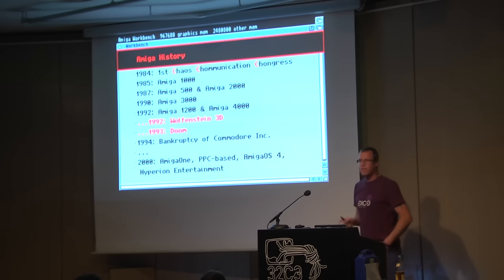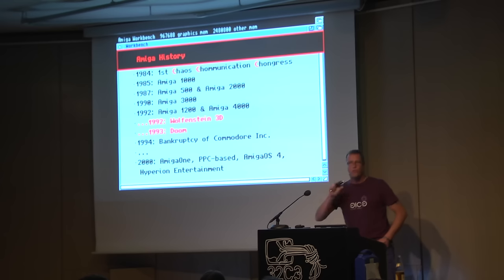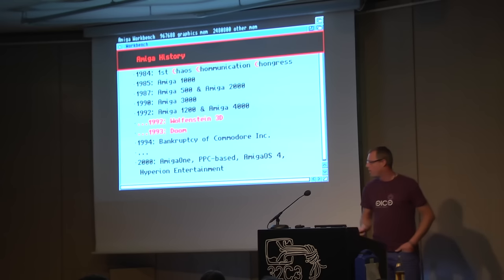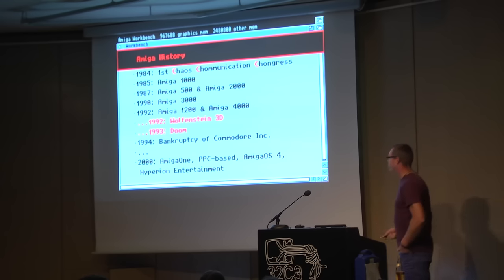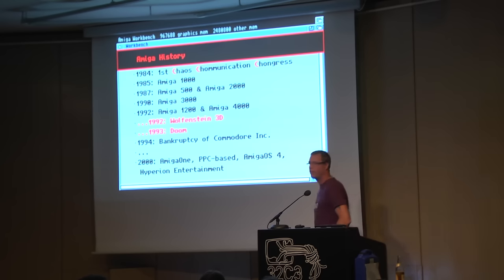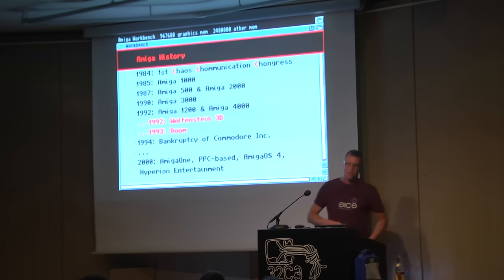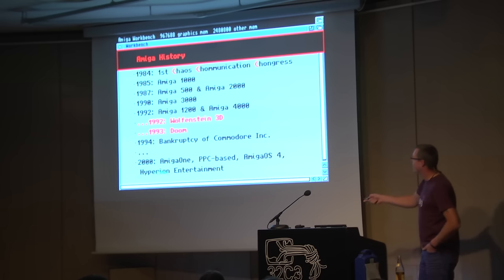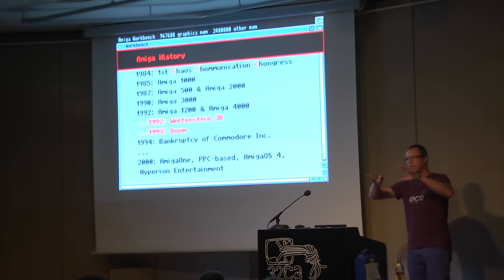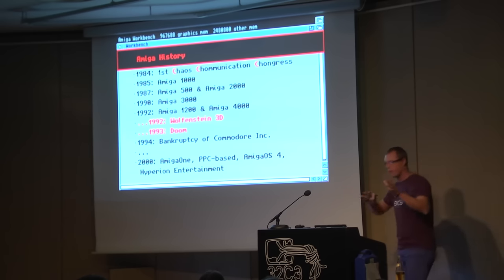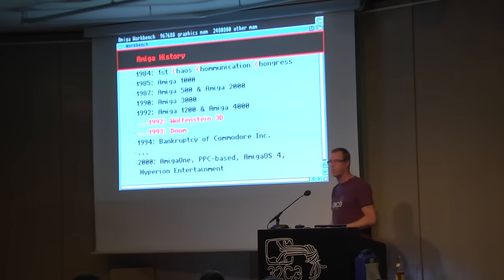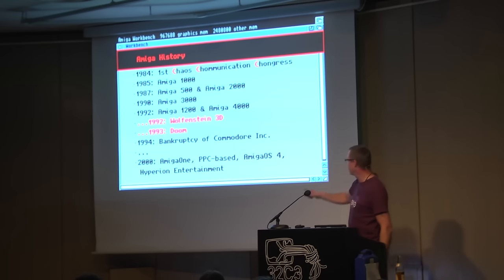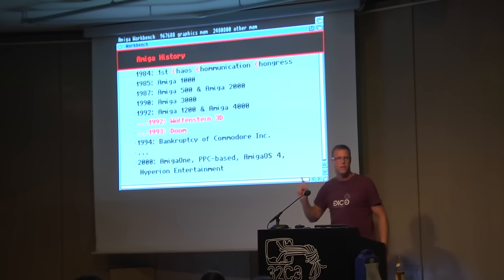But the Amiga didn't die. There is further history. There is the Amiga One, which is PowerPC-based and has AmigaOS version 4, further developed by some companies — here I mention Hyperion Entertainment, but several companies were involved and the license was sold from one to the next. It's still alive: the last version of OS 4 was released, I think, in 2014.